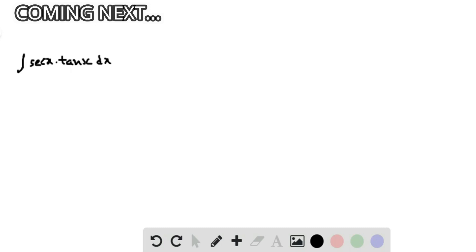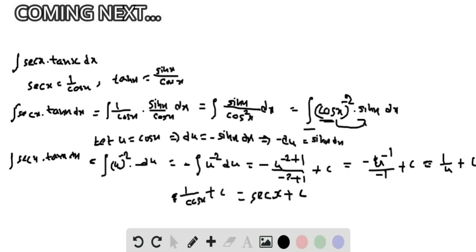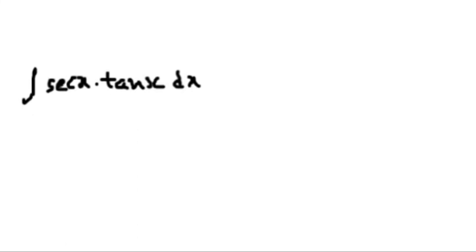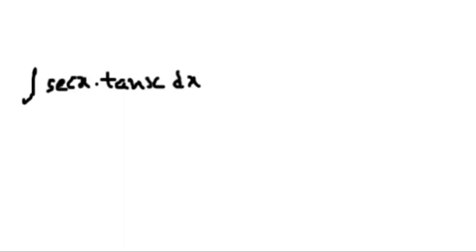We are going to be evaluating the integral of secant x times tan x dx. Using the trigonometric identities, the integral of secant x tan x dx equals secant x plus C.